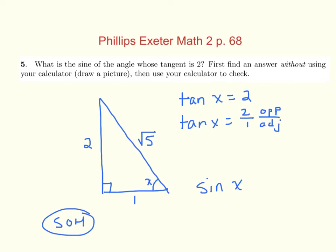So now we have sine of x is going to be 2 over square root 5. The rule typically is that we don't want to have an irrational number, a square root or radical, in the denominator.